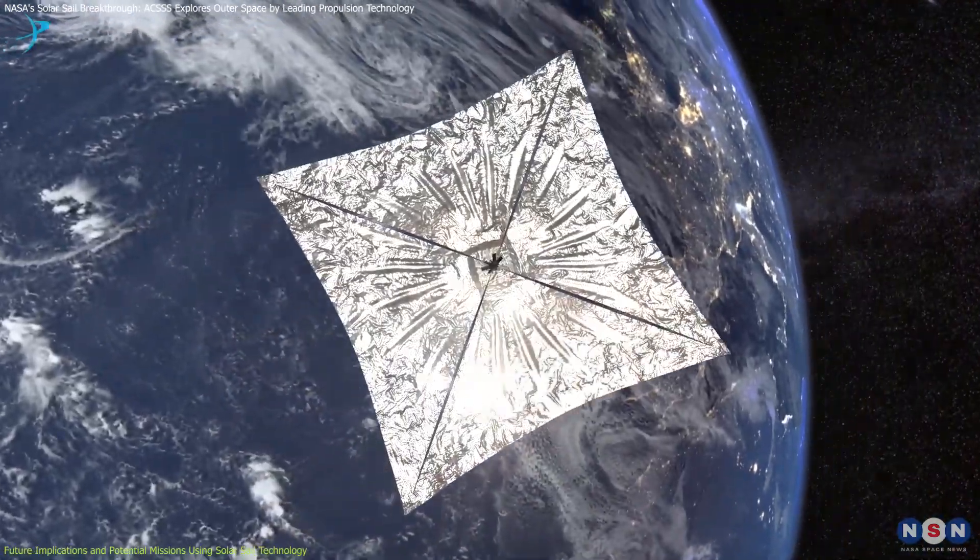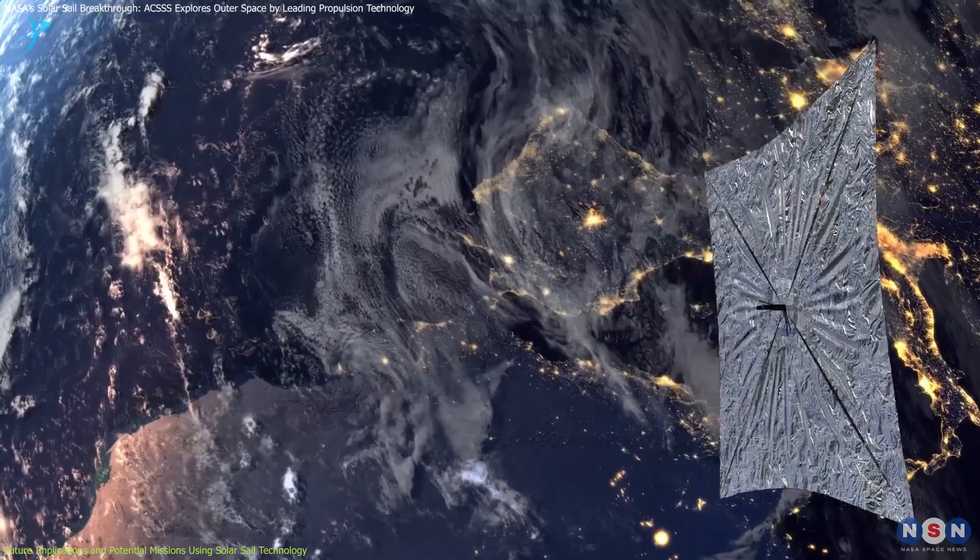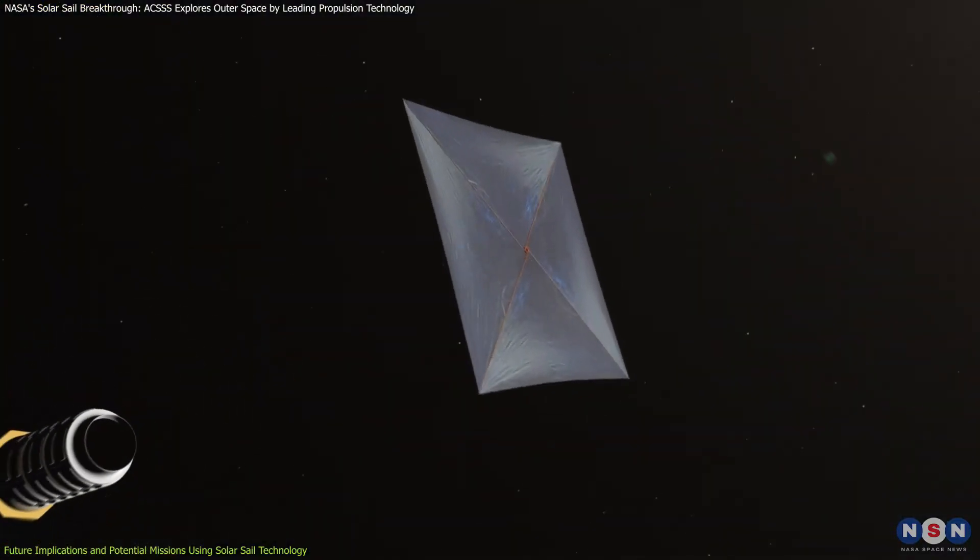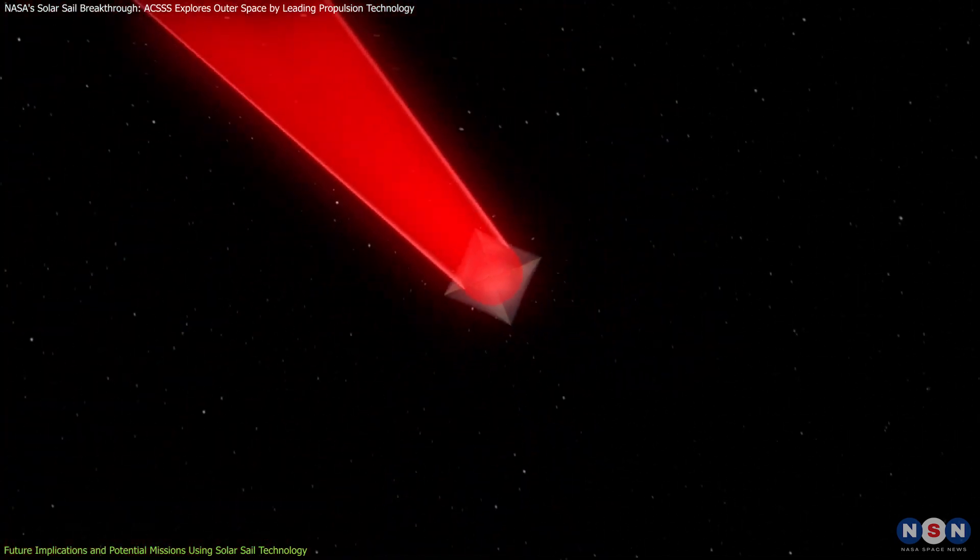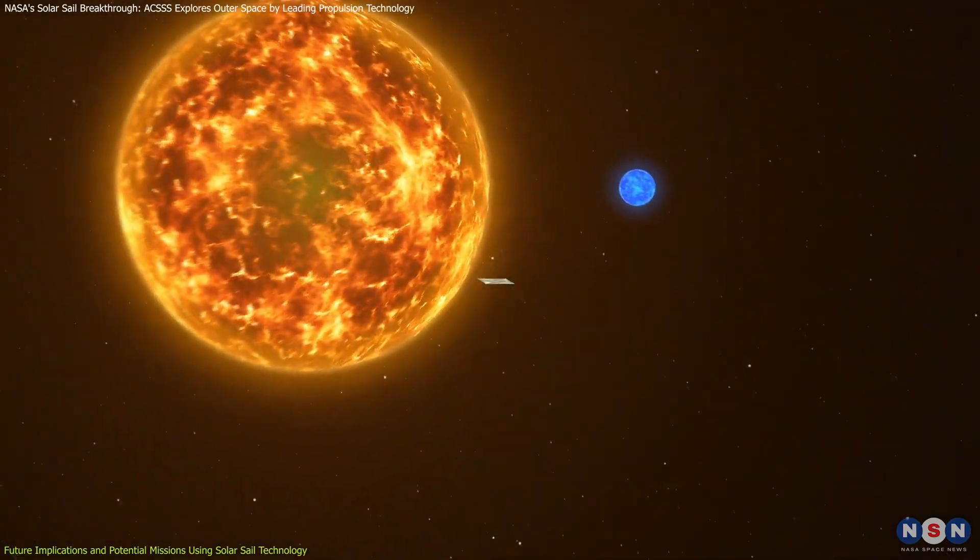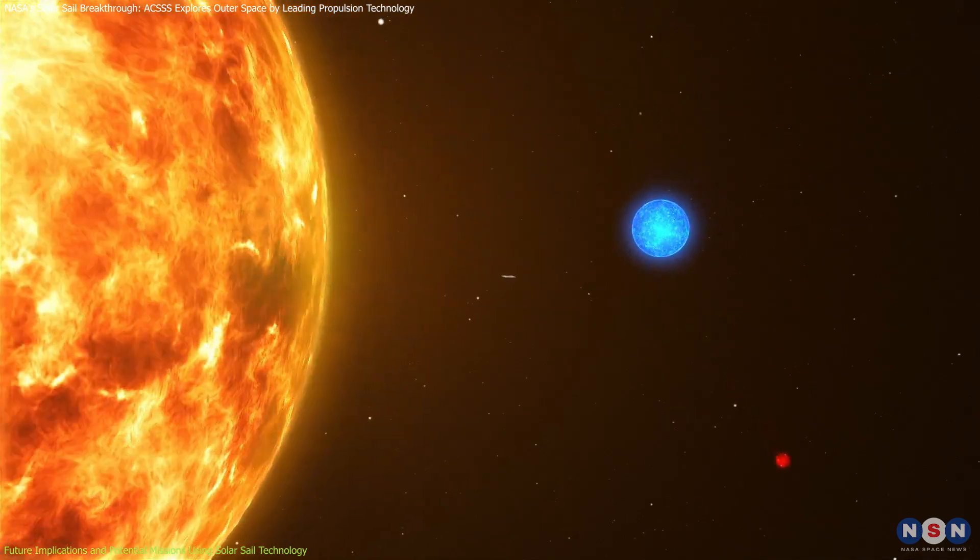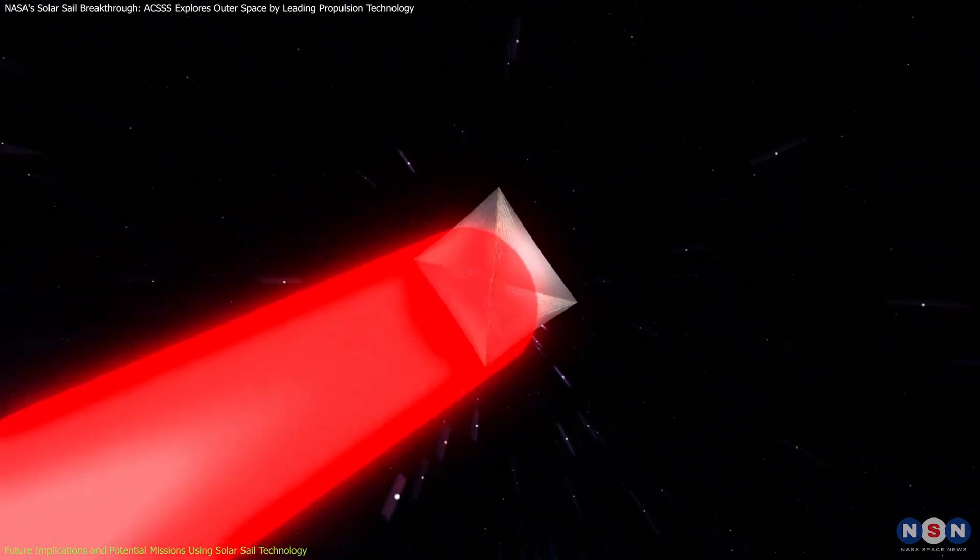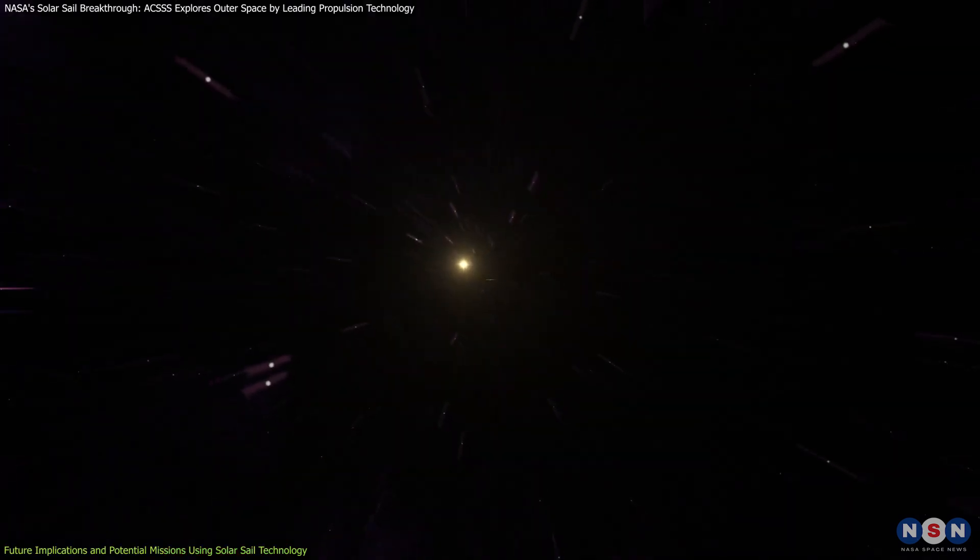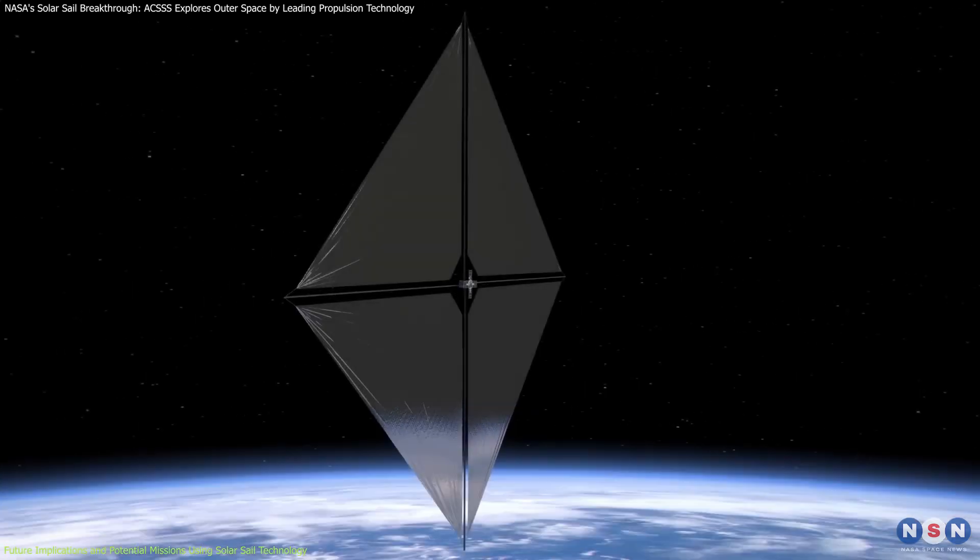Moreover, the innovations tested with ACSSS pave the way for even more ambitious projects. One example is the Breakthrough Starshot Initiative, which proposes using laser-driven solar sails to reach Alpha Centauri, our nearest star system, in search of extraterrestrial life. The concept relies on solar sails' potential for continuous acceleration, allowing them to achieve extremely high speeds, potentially making interstellar exploration feasible within our lifetime.